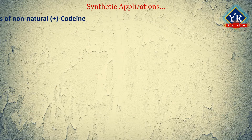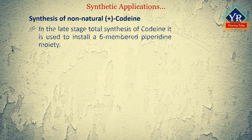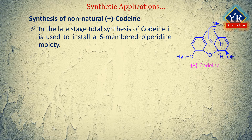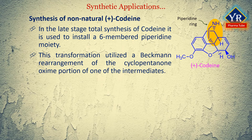In the synthesis of non-natural codeine, in the late stages of the total synthesis, it was necessary to install a six-membered piperidine moiety. This transformation was accomplished utilizing a Beckman rearrangement of the cyclopentanone oxime portion of one of the intermediates. Later, the six-membered lactam was reduced to the corresponding amine with lithium aluminium hydride.